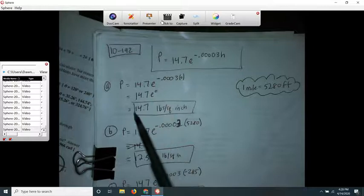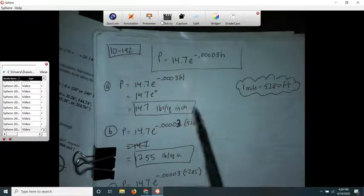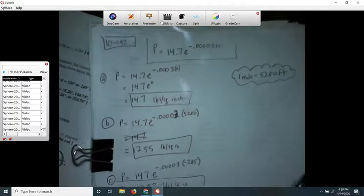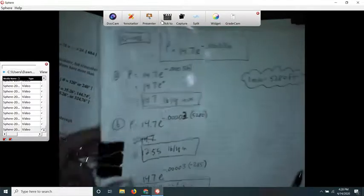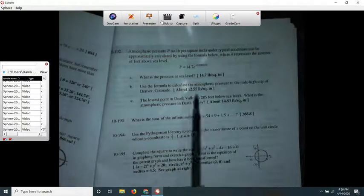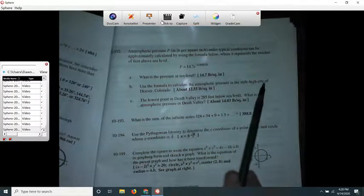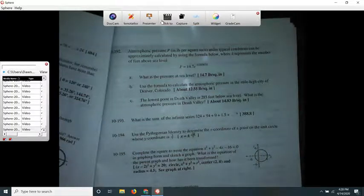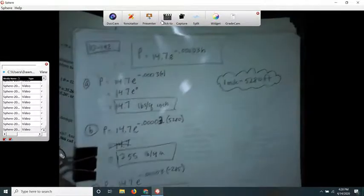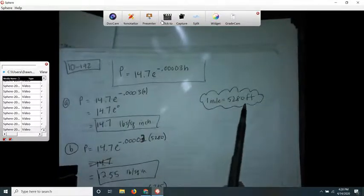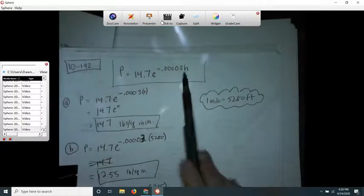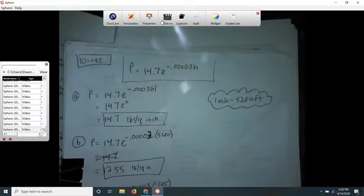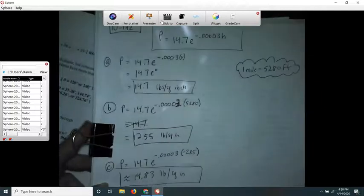Because 0 times this number is just gonna make 0, and then e to the 0, anything to the 0 power is 1. So that one you didn't really need to break out your calculator. The next one they ask you a question: they want the atmospheric pressure at the mile-high city of Denver.